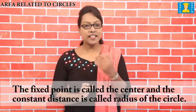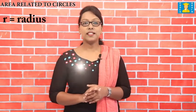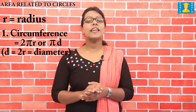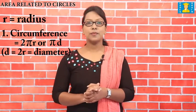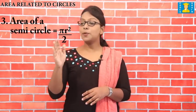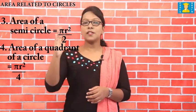Moving on to the second topic: areas of a sector and segment of a circle. A circle is the locus of a point which moves in a plane such that its distance from a fixed point is always constant. The fixed point is called the center and the constant distance is called the radius. Key formulas: circumference = 2πr or πd where d = 2r; area = πr² or πd²/4; area of semicircle = πr²/2; area of a quadrant = πr²/4.